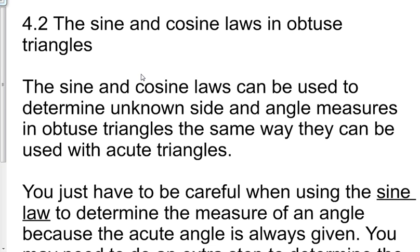Section 4.2: The sine and cosine laws in obtuse triangles. The sine and cosine laws can be used to determine unknown side and angle measures in obtuse triangles the exact same way that they can be used with acute triangles.